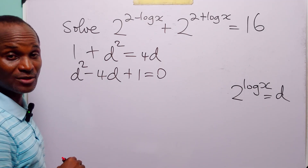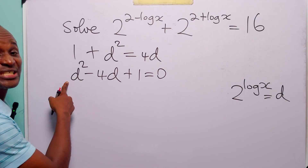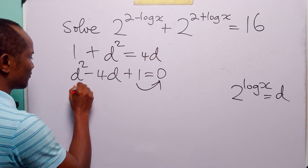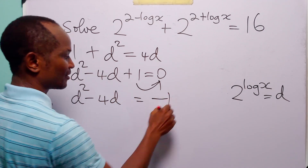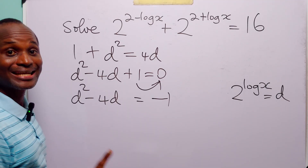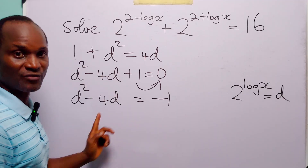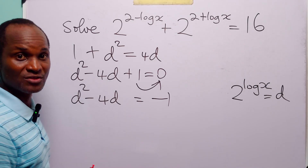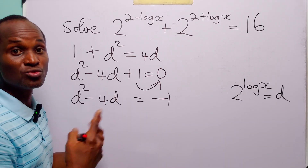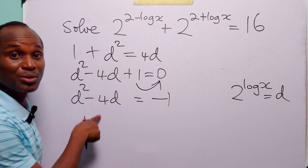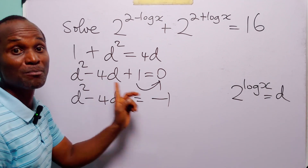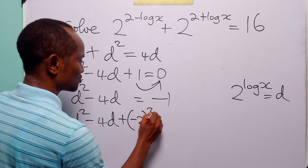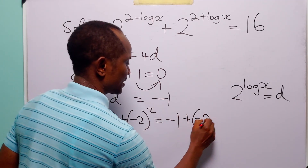We cannot factorize this quadratic equation, so let us solve by completing the square method. Since the coefficient of d squared is already 1, the next step is to move the constant term to the right-hand side, giving d squared minus 4d is equal to minus 1. We then add the square of half the coefficient of d to both sides. The coefficient of d is minus 4, half of that is minus 2, so we add minus 2 squared to both sides.